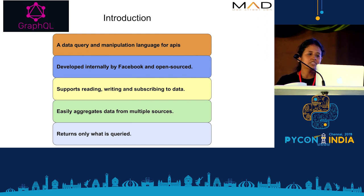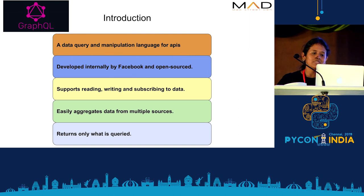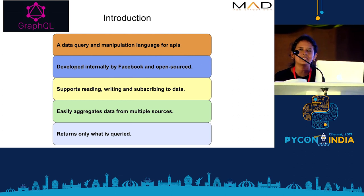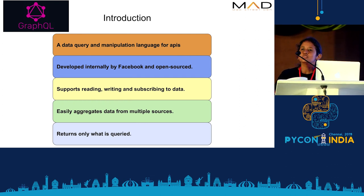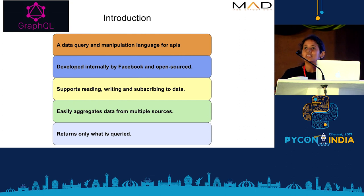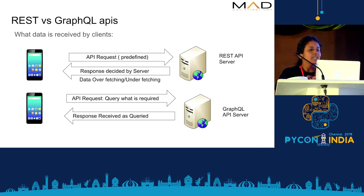Briefly introducing Graph Query Language: it's a data query and manipulation language for APIs, similar to how SQL is for databases. GraphQL is basically a standard for developing APIs to describe the data available with a server using a schema, and then the client can use queries to request whatever data it requires.